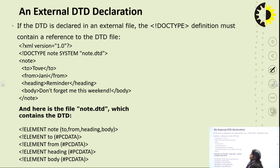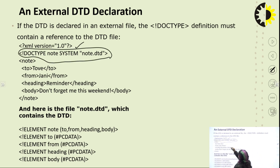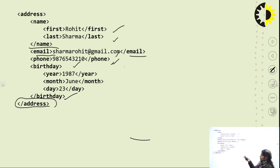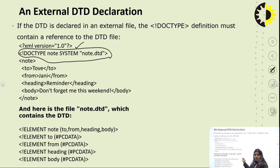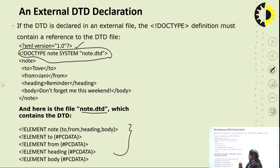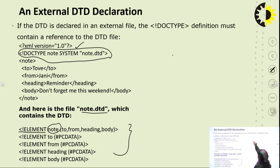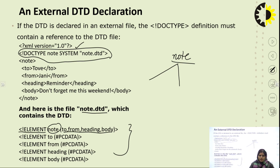In external DTD, first pass the XML version value, then provide the reference for the external DTD file. The external DTD is written separately — not inside the XML document as in internal DTD. For example, the external DTD file is named 'node.dtd'. In this DTD file, the first element declared is 'node', which is the root node, further divided into four elements.